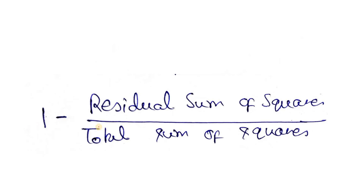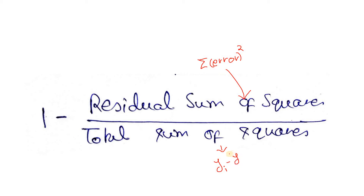The typical formula for the coefficient of determination is: 1 minus residual sum of squares divided by total sum of squares. The residual sum of squares is the summation over all data points of (actual minus predicted)², and the total sum of squares is the summation of (yi minus the average of all y values)², which is indicated by the total sum of squares term.